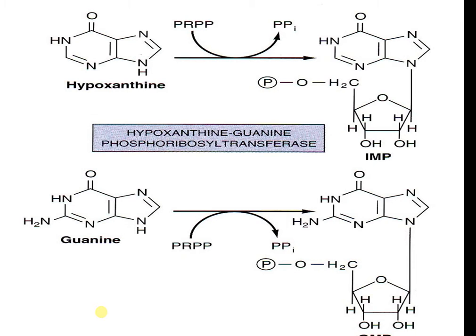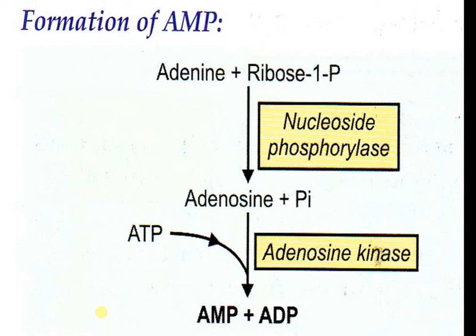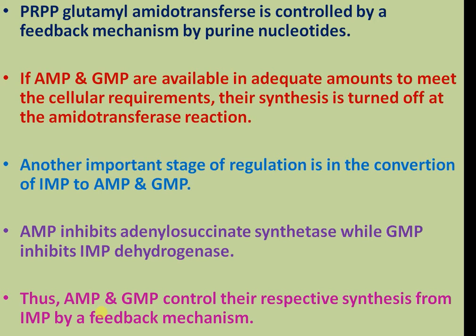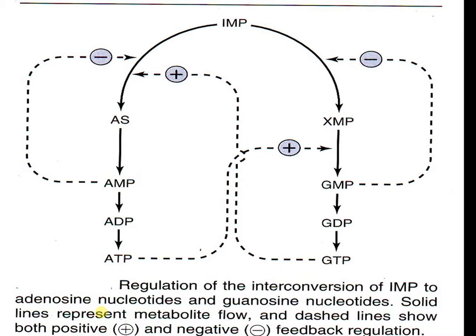In terms of regulation: adenosine to AMP, hypoxanthine to AMP, and guanine to guanosine monophosphate. Purine nucleotide synthesis is well-coordinated to meet cellular demand; intracellular concentration of PRPP regulates purine synthesis to a large extent. This depends on the availability of ribose 5-phosphate and the enzyme PRPP synthase. PRPP glutamyl amide transferase is controlled by feedback inhibition by purine nucleotides. When AMP and GMP are available in adequate amounts for cellular requirements, they inhibit amide transferase action. Another important level of regulation is the interconversion of AMP and GMP to maintain balance.